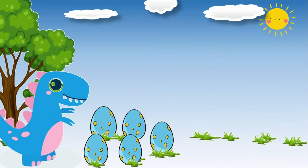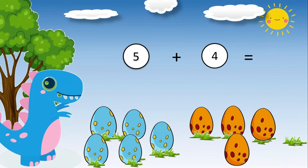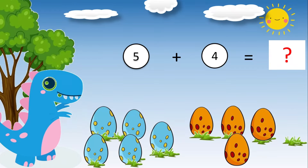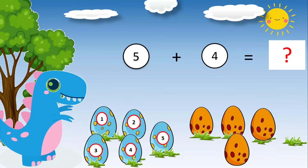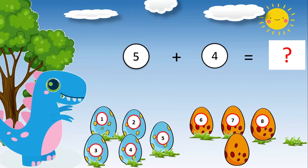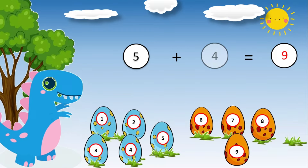Five dinosaur eggs plus four dinosaur eggs is equal to what? Do you want to know the answer? Let's add one, two, three, four, five, six, seven, eight, nine. Five plus four is equal to nine.